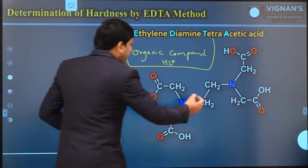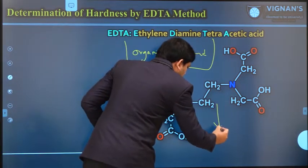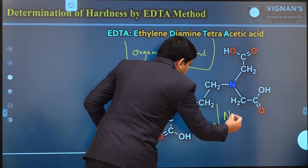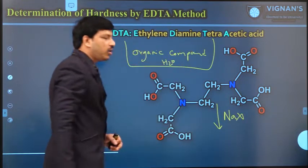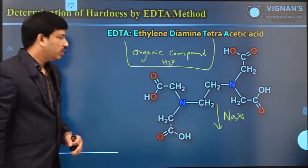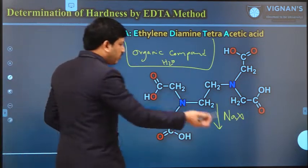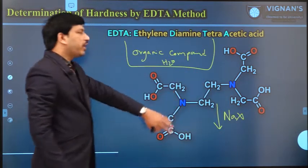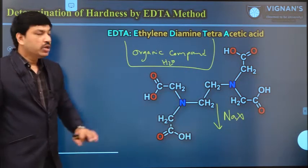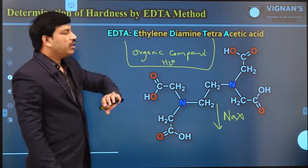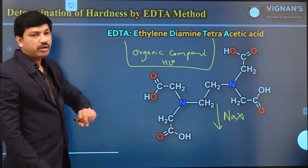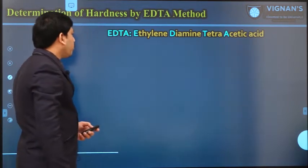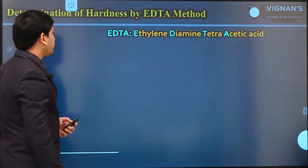So instead of using EDTA directly, we have to use the disodium salt of EDTA. What is the disodium salt of EDTA? If the EDTA molecule reacts with any sodium compound — where X means OH⁻ or Cl⁻ or whatever it is — then it will form the corresponding disodium salt of EDTA, which is actually more ionic in nature.